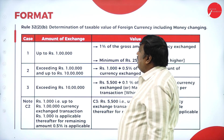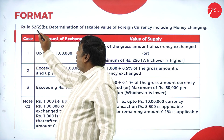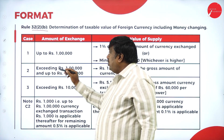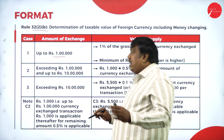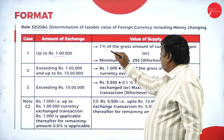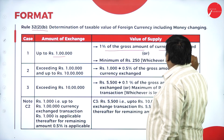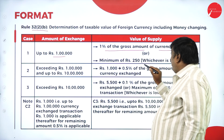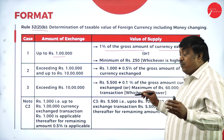The terms and conditions for Rule 32 sub-clause B: For exchange of amount up to ₹1 lakh — 1 percent of the gross amount of currency exchanged, or a minimum of ₹250 per transaction, whichever is higher.